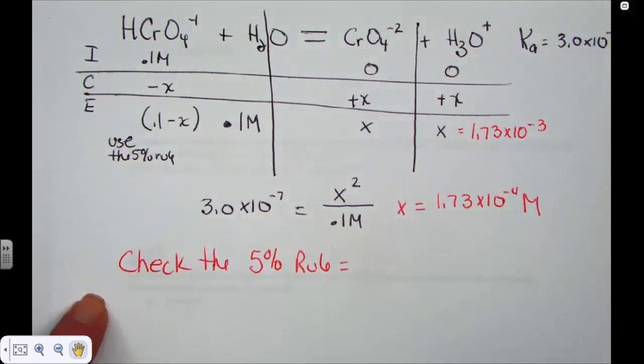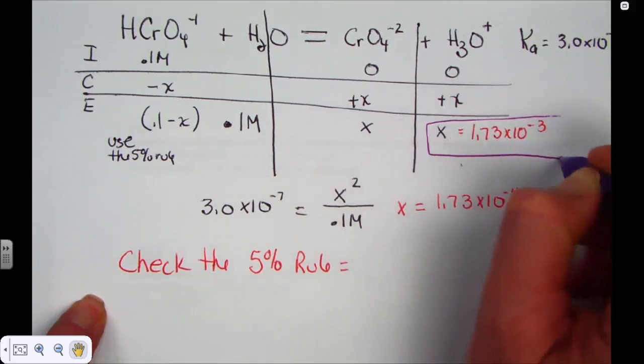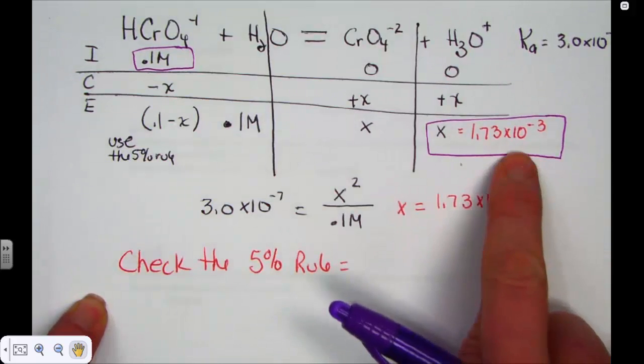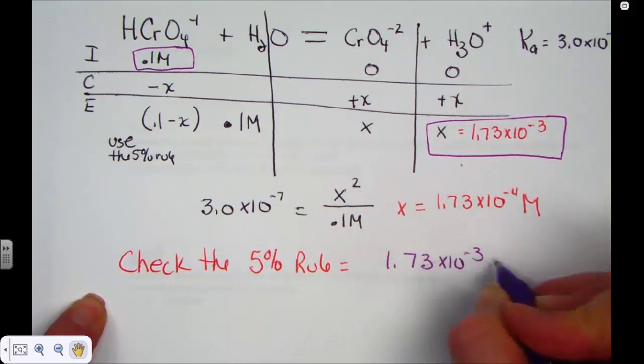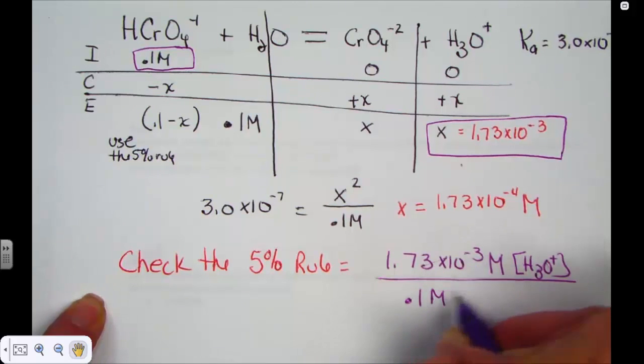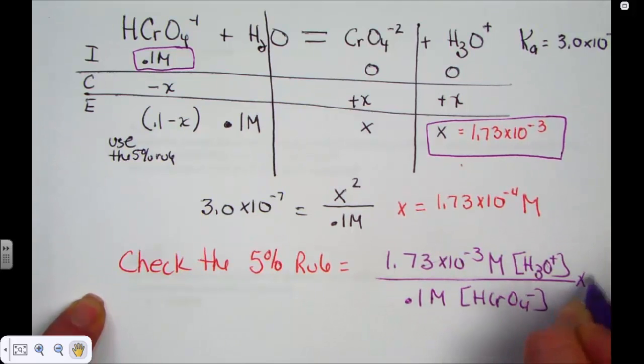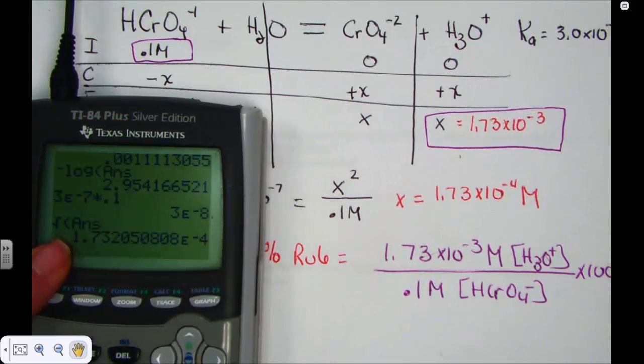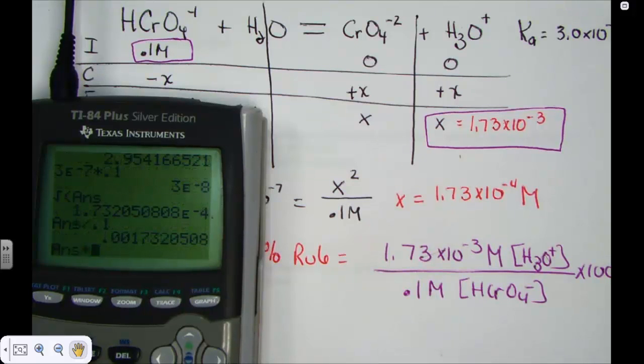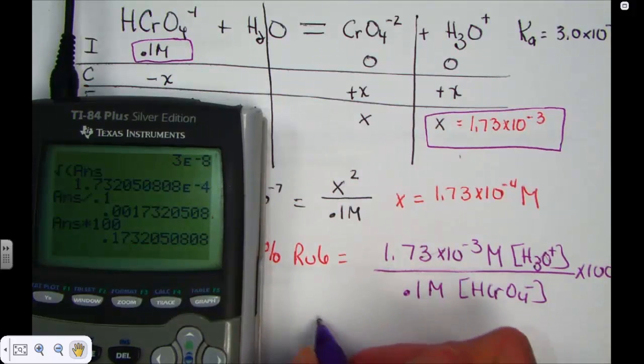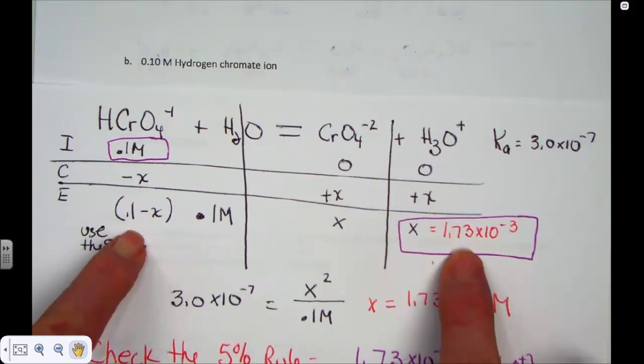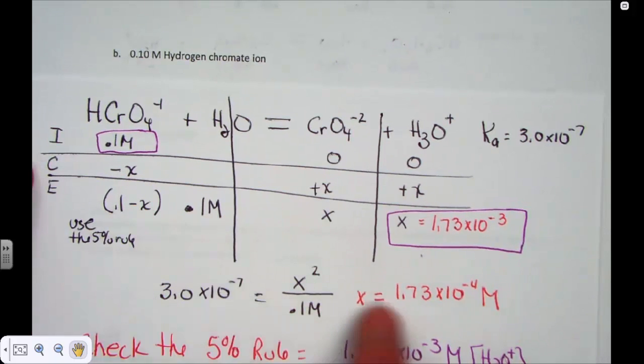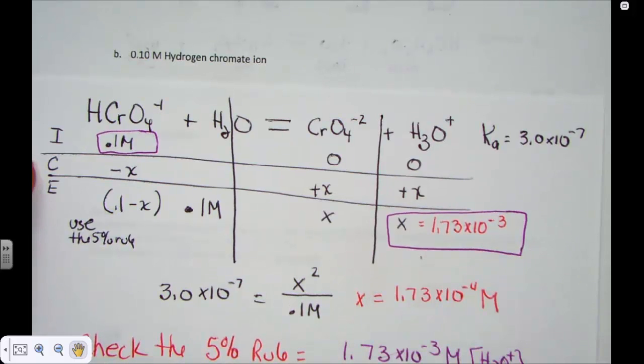Now all that means is take the concentration that we found at equilibrium for X and compare it to the original value, part over whole, and see if it's 5% or less. So we found 1.73 times 10 to the negative 3 molar units as the concentration of hydronium over the original concentration of the acid, 0.1 molar. I'm going to divide by 0.1 times 100 to express it as a percent. Oh my goodness, we're well under. So 0.17% is well under the 5% rule. That means that our math was valid.